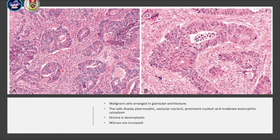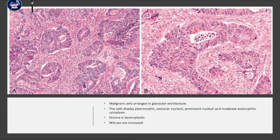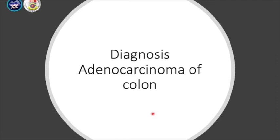On histological assessment, malignant cells are arranged in a glandular architecture. The cells are pleomorphic with vesicular nuclei, prominent nucleoli, and moderate eosinophilic cytoplasm, along with numerous mitoses — some star-shaped, some resembling a Mercedes-Benz shape. The intervening stroma shows desmoplasia and retraction artifact. These are the features of adenocarcinoma of the colon.